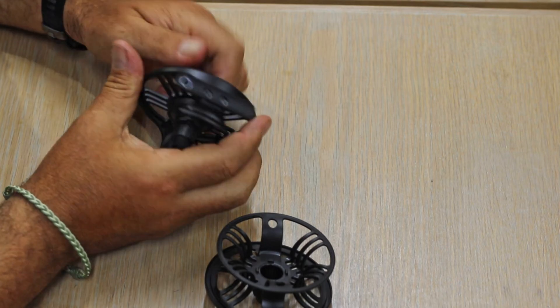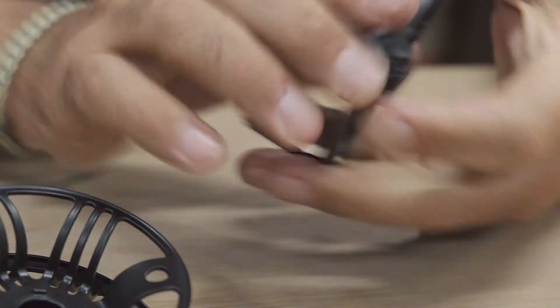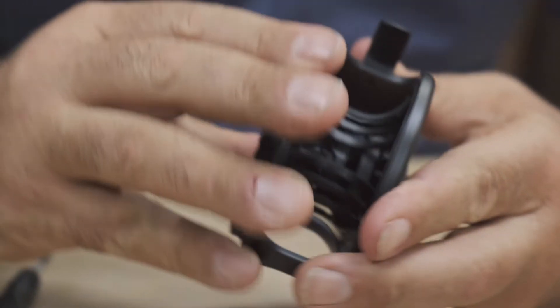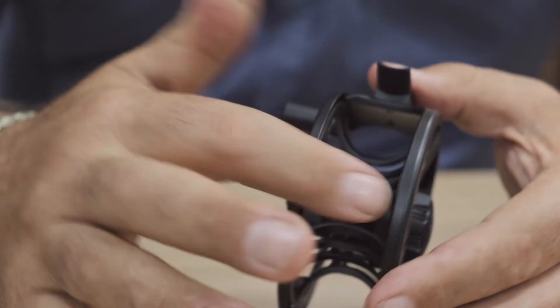The trick is to tighten the drag as hard as you can. Put the reel spool on and twist against the drag until it sits flush.